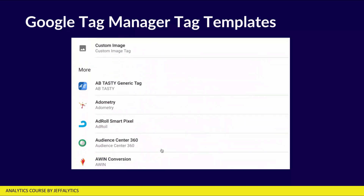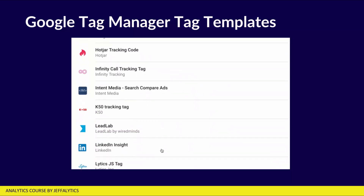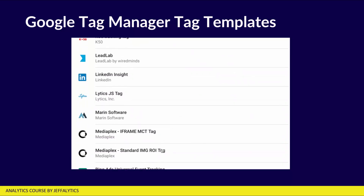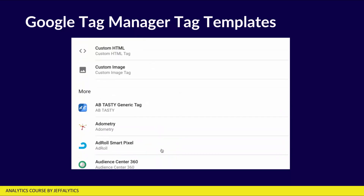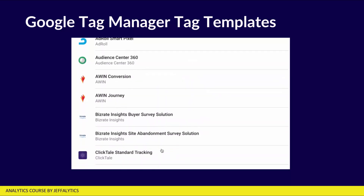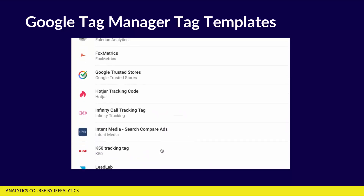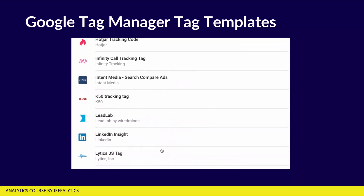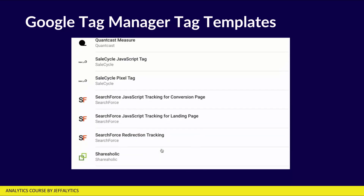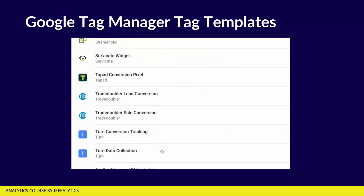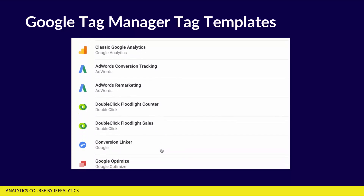You can see things like Bing Ads, Twitter Ads — almost every system you can use is in here, with the notable exception of Facebook. Pretty much anything you can dream of tracking, pretty much all the technologies on that Gartner subway map, are things you can track within Google Tag Manager.